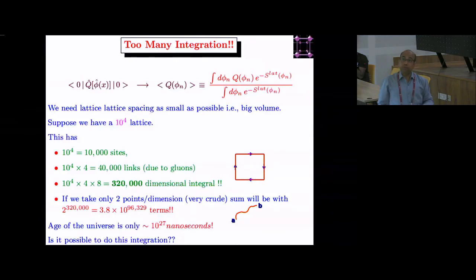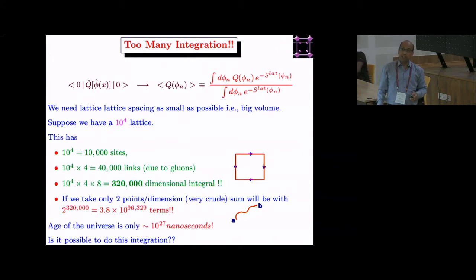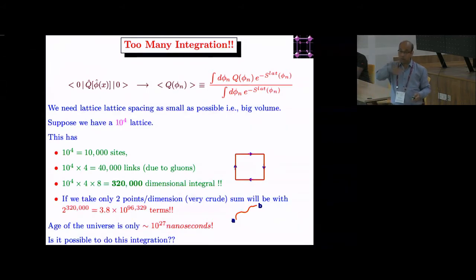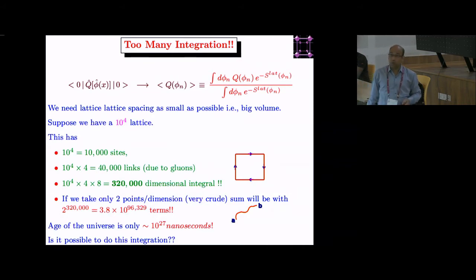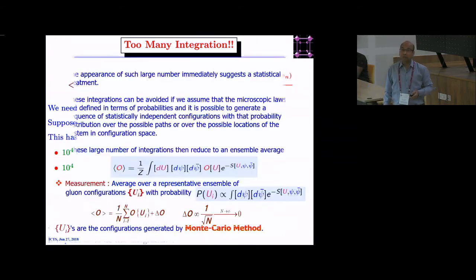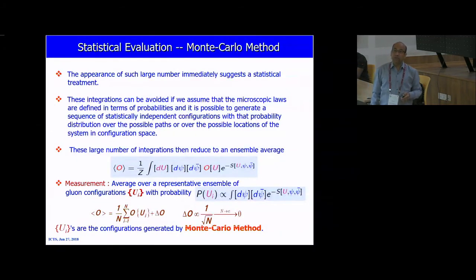On a 10⁴ lattice, we have four gauge links per site — these are SU(3) matrices. With 10⁴ lattice sites, there are 40,000 links, and each link has eight gluon degrees of freedom, giving a 30,000–100,000 dimensional integral. If you try to do that integration directly, the number of terms and the age of the universe tell you it's not feasible. So this large number of degrees of freedom immediately tells us we don't do the integration directly — we must do it the Monte Carlo way.